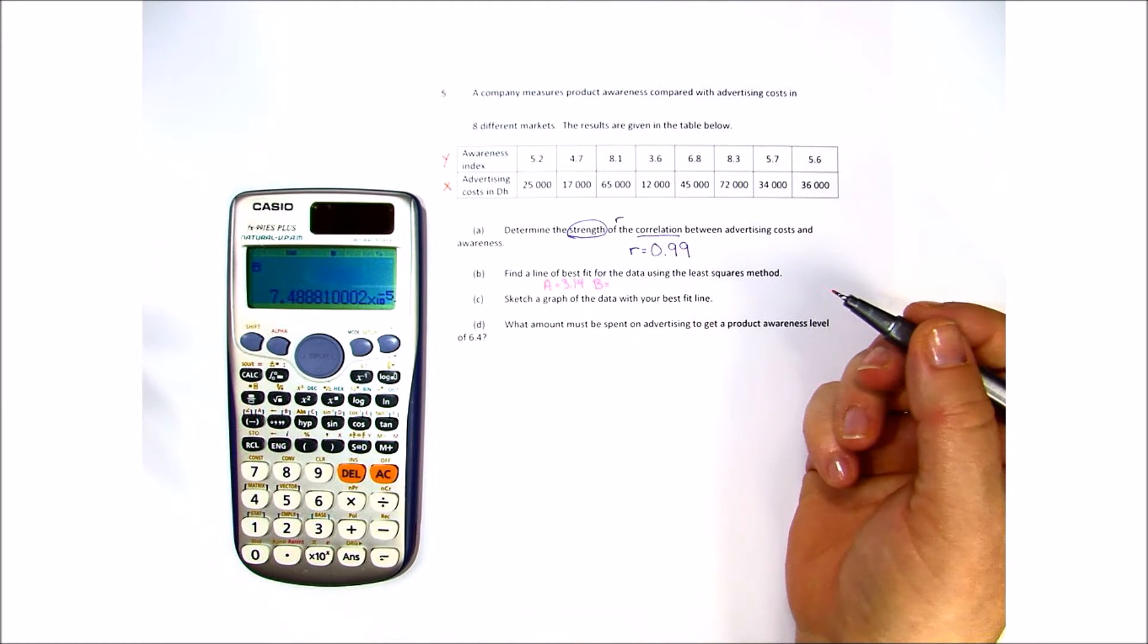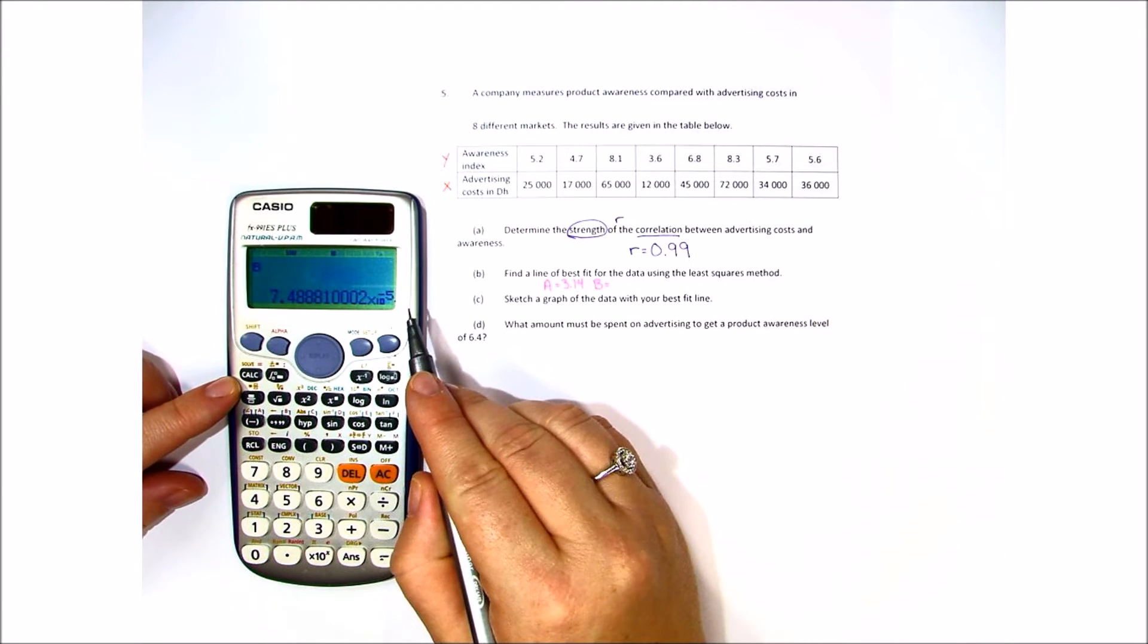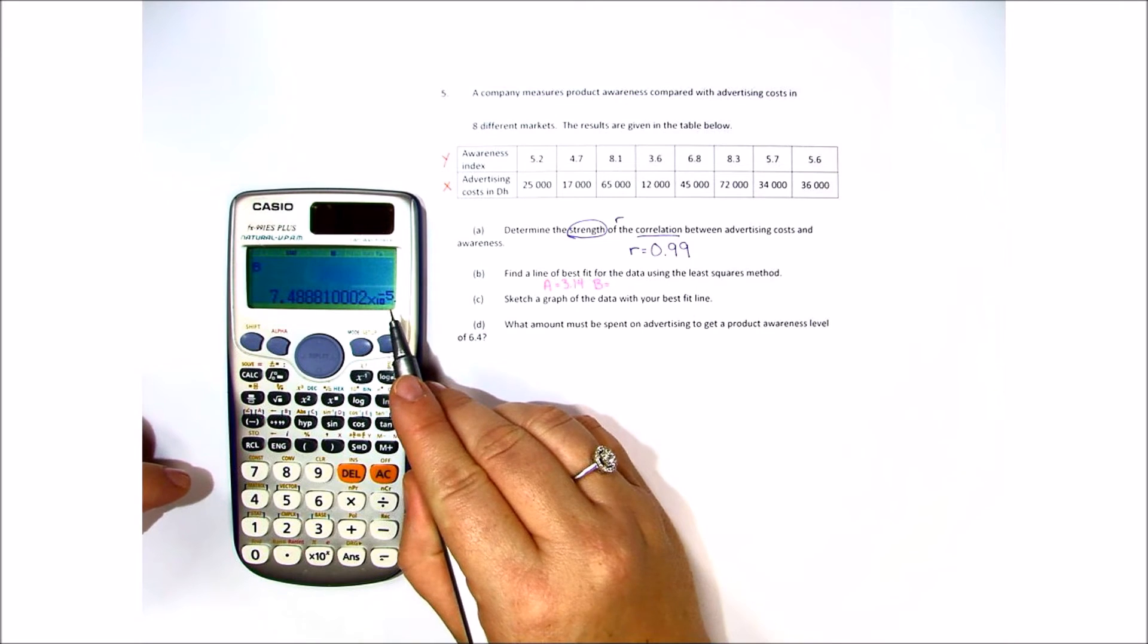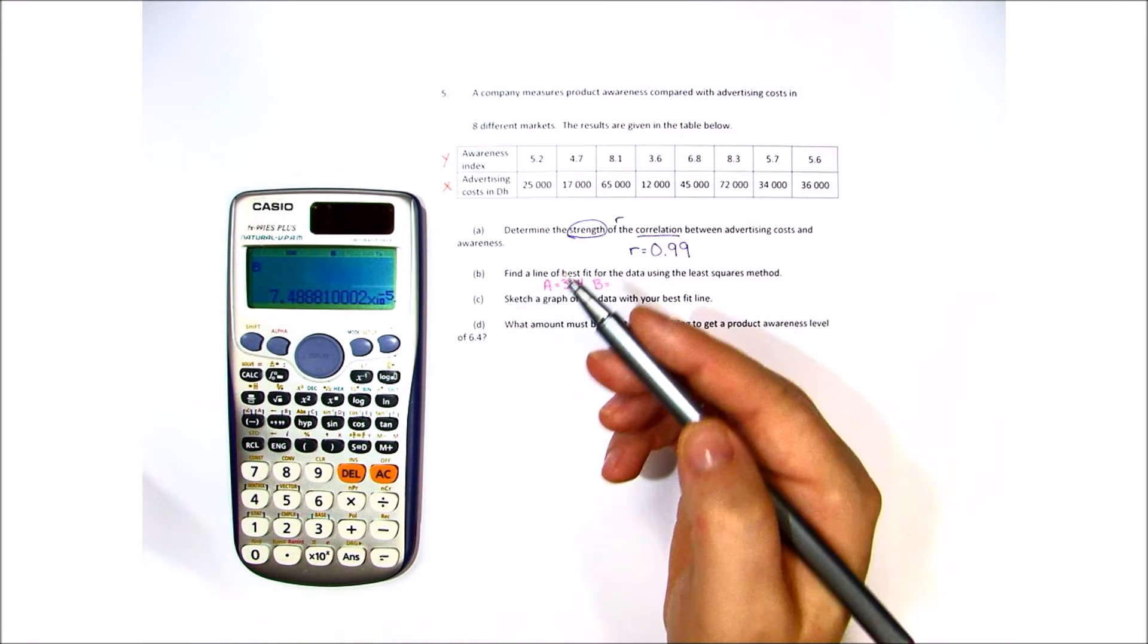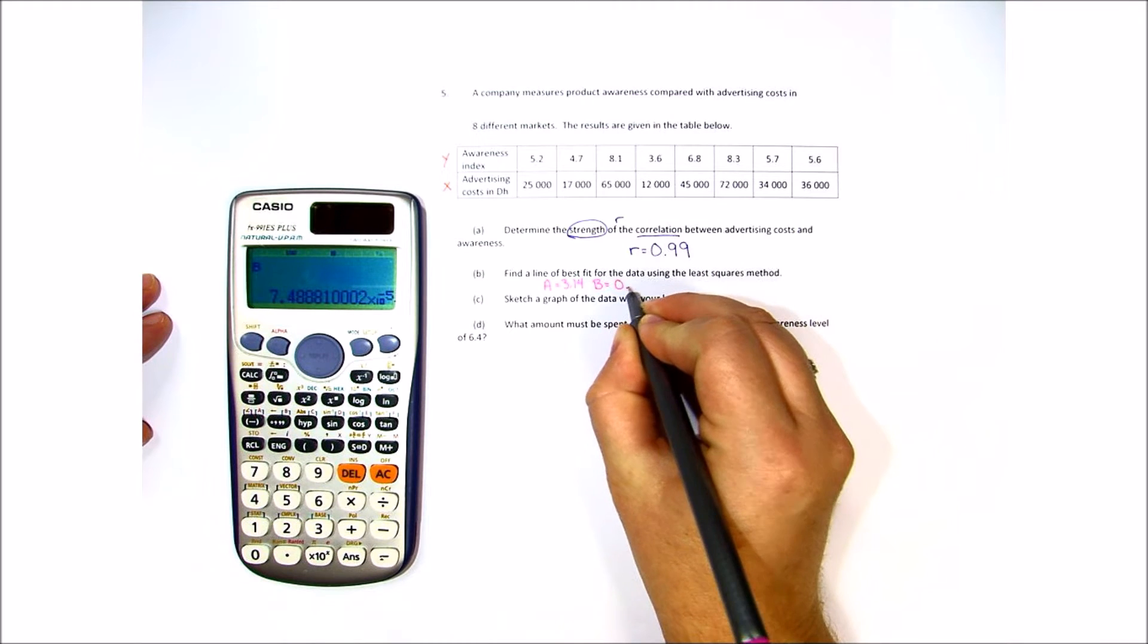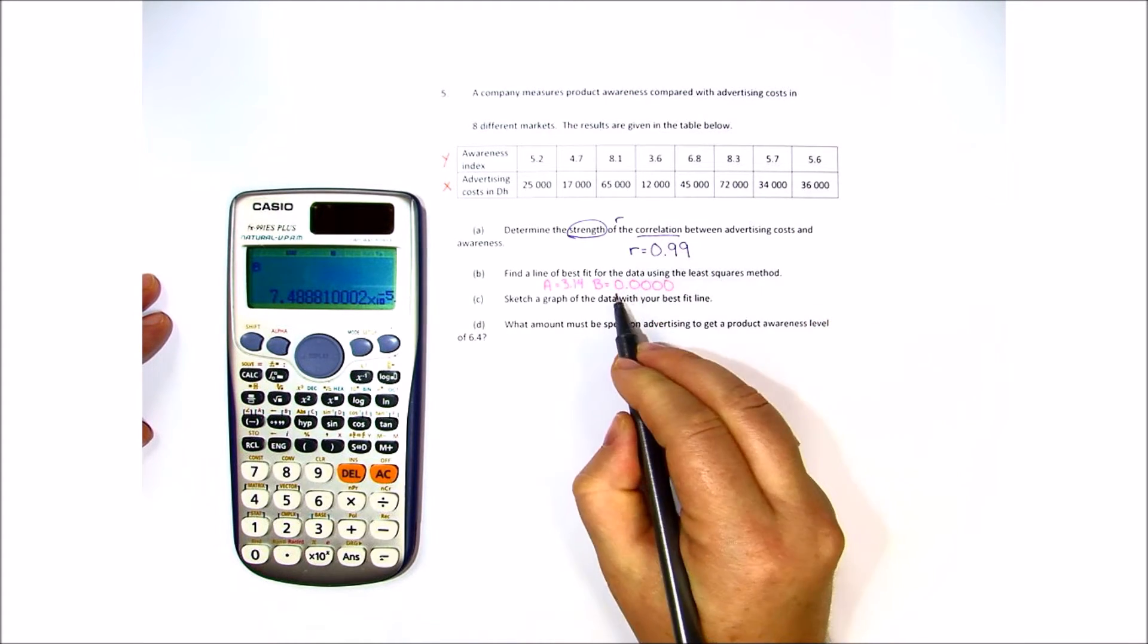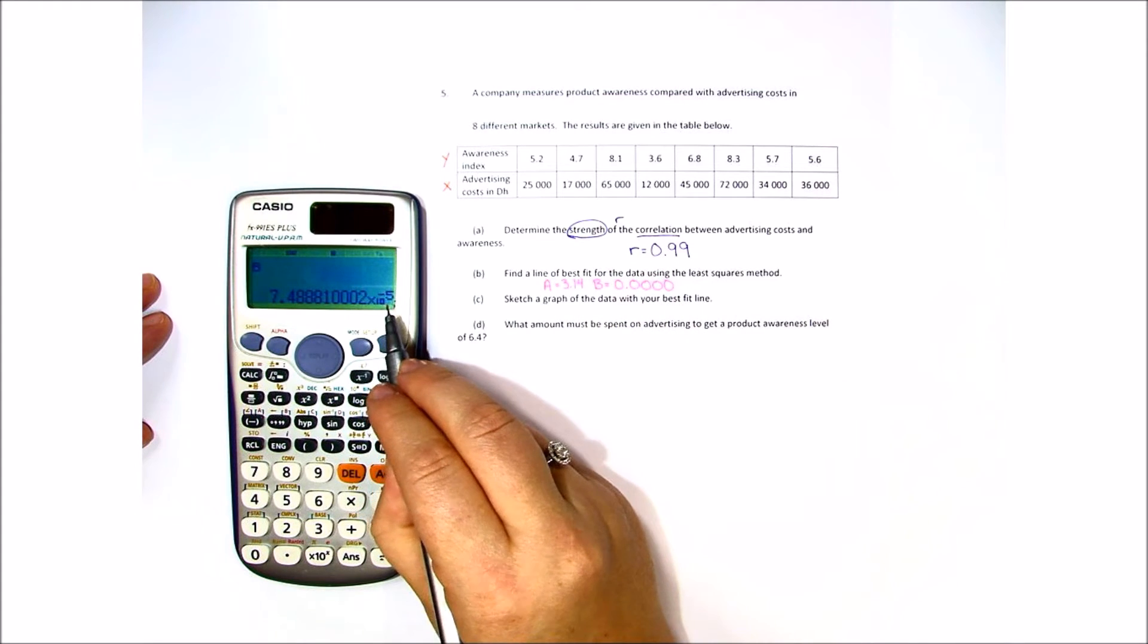And b is this really crazy number, and I'm not quite sure what to do. It's got this negative 5. Now what this negative 5 means is that it's going to be a very small decimal. In other words, we're going to see 0.00000.